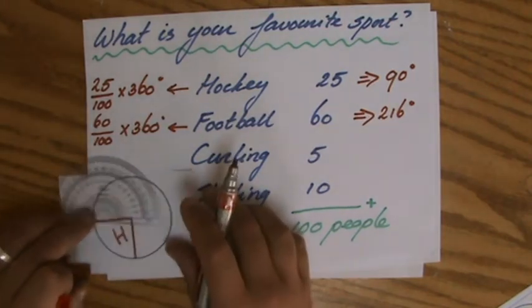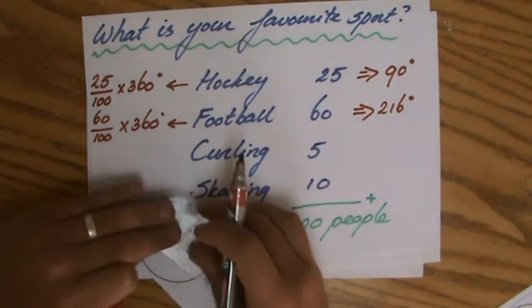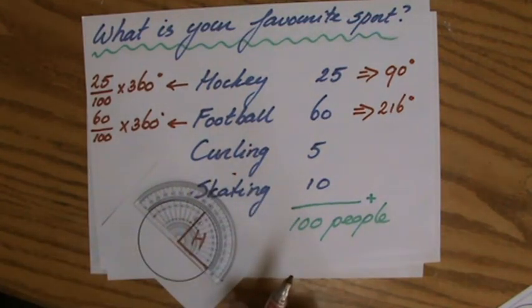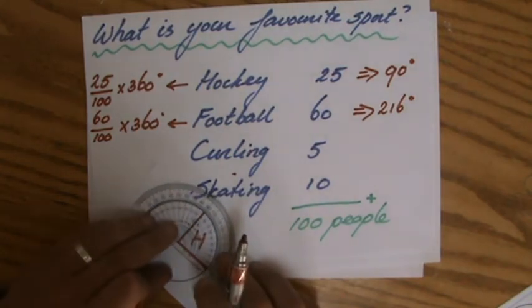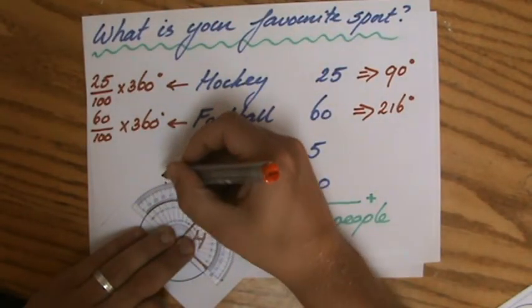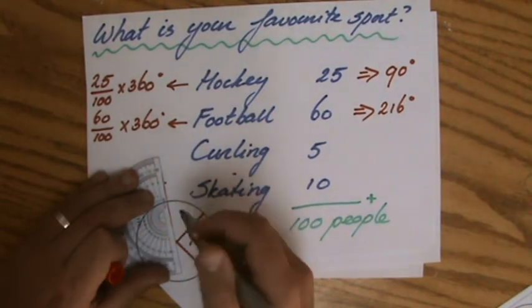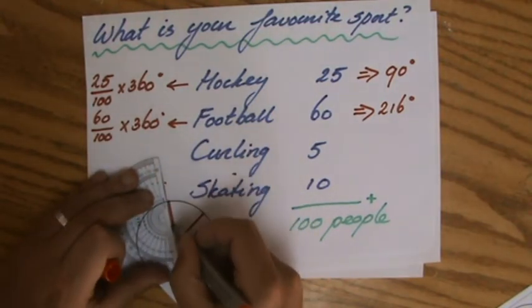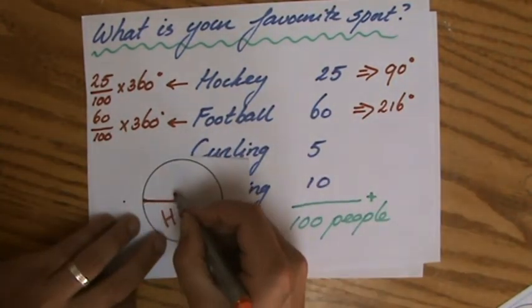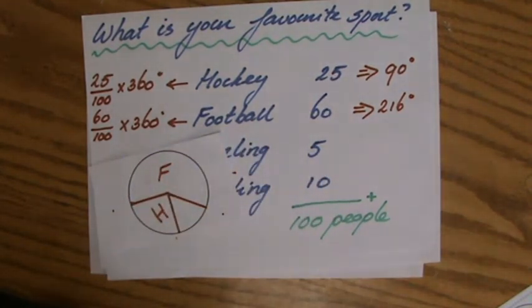Because 216 is 180 plus a little bit more, I'm going to turn it around. The reflex angle 216 degrees is 180 plus 36, so I'm going to measure 36 and go in that direction. This is 216 degrees, and those are the people who like football, so I put a big F in it.